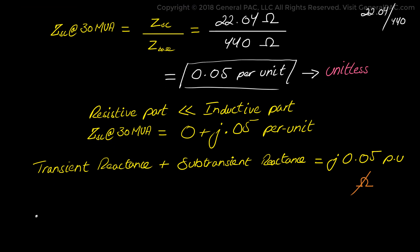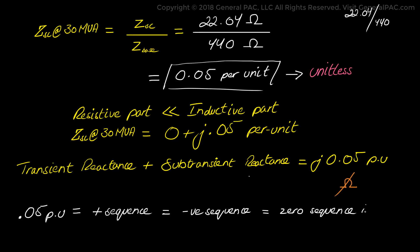Furthermore we are going to assume that the 0.05 per unit is the same as the generator's positive sequence impedance, negative sequence impedance as well as zero sequence impedance. So we are assuming that the generator's impedances are going to equal j0.05 per unit.